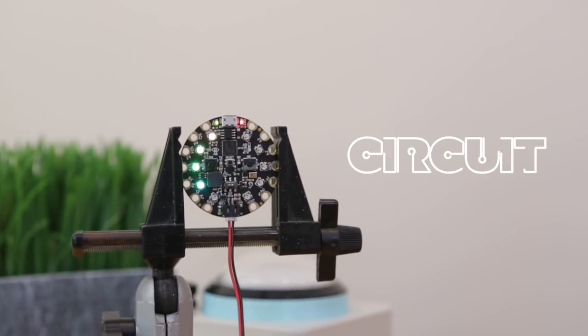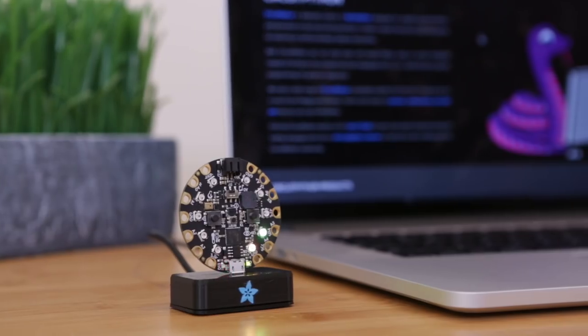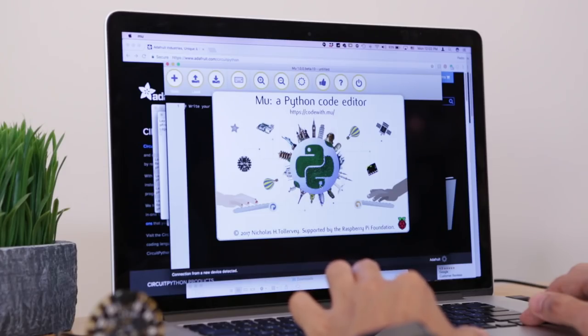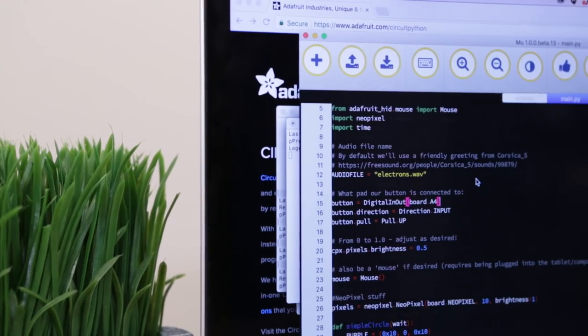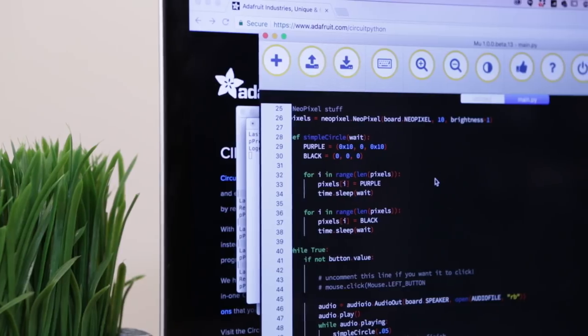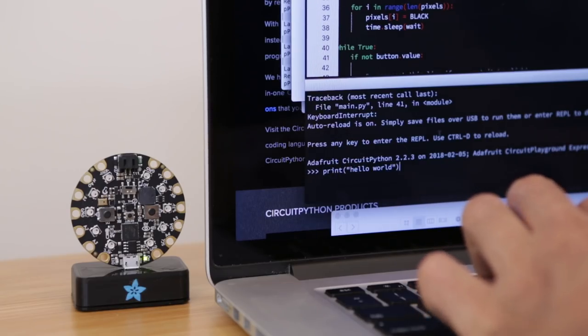Circuit Playground Express is our all-in-one board that has built-in sensors and LEDs, so it's really great for anyone who wants to learn electronics and programming. It's CircuitPython-ready, so you can use the Mu Python editor to write your code. It's easy to use Adafruit's libraries and example code to quickly develop programs. You can also use the REPL Serial Console to quickly test your code without having to compile.